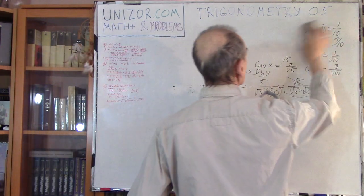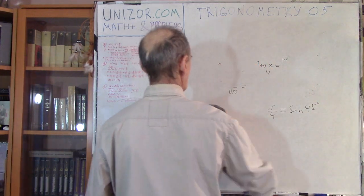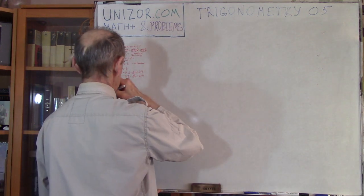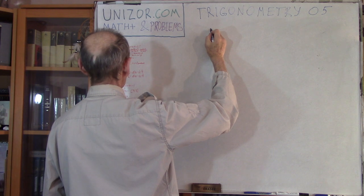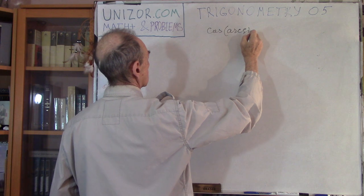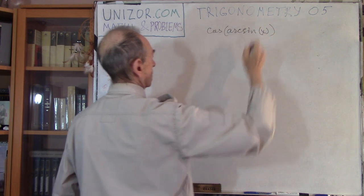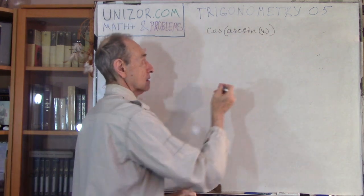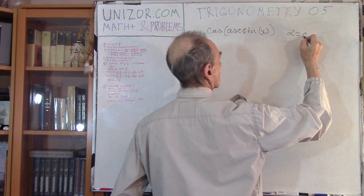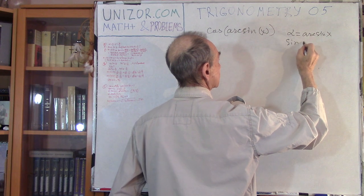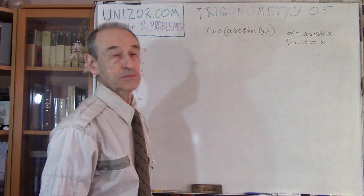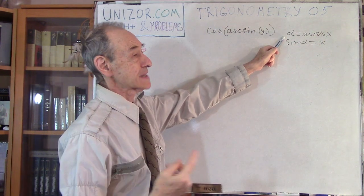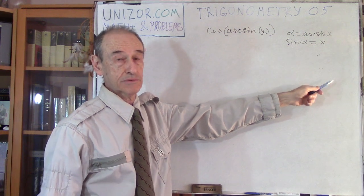The third and last problem of this lecture: I have to simplify the expression cosine of arc sine of x. What do we know about arc sine? Arc sine by definition: if alpha equals arc sine of x, then alpha is such an angle whose sine equals x. That's the definition of arc sine. But there are many different angles whose sine equals x, because sine is a periodic function with period 2pi.